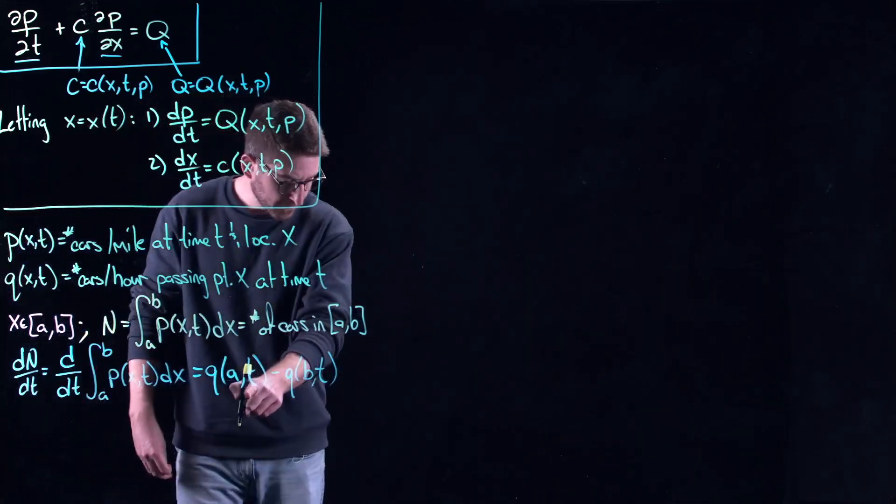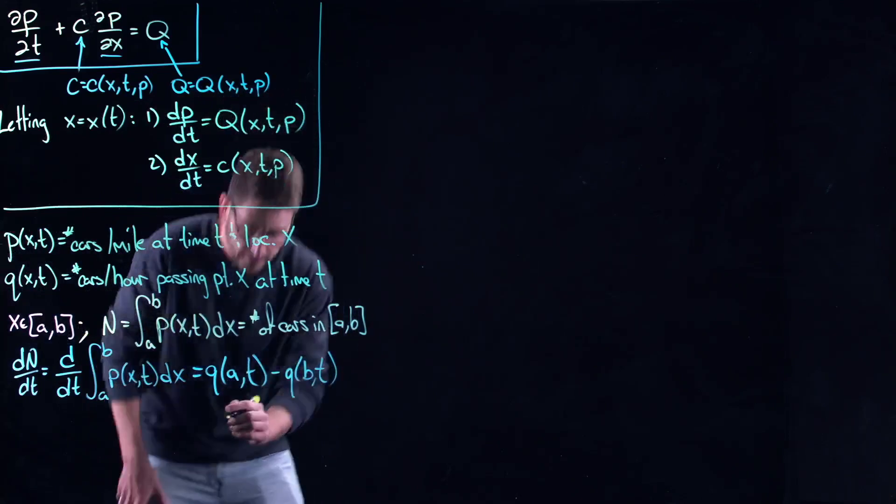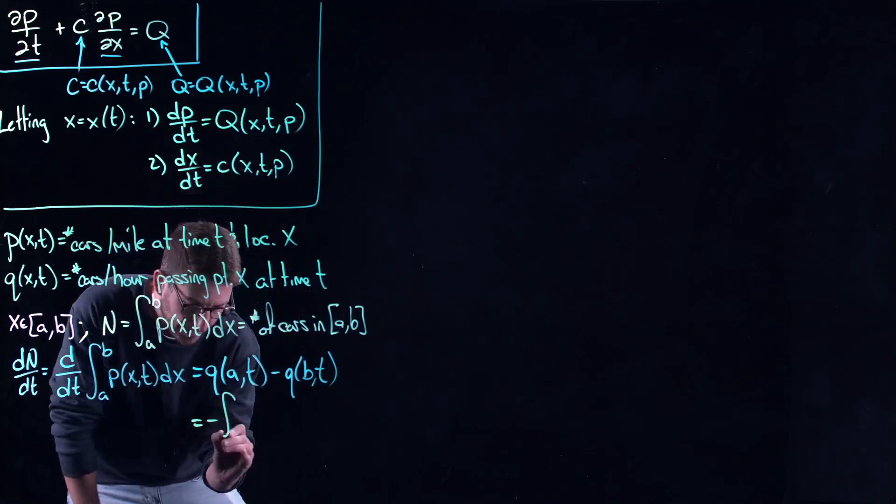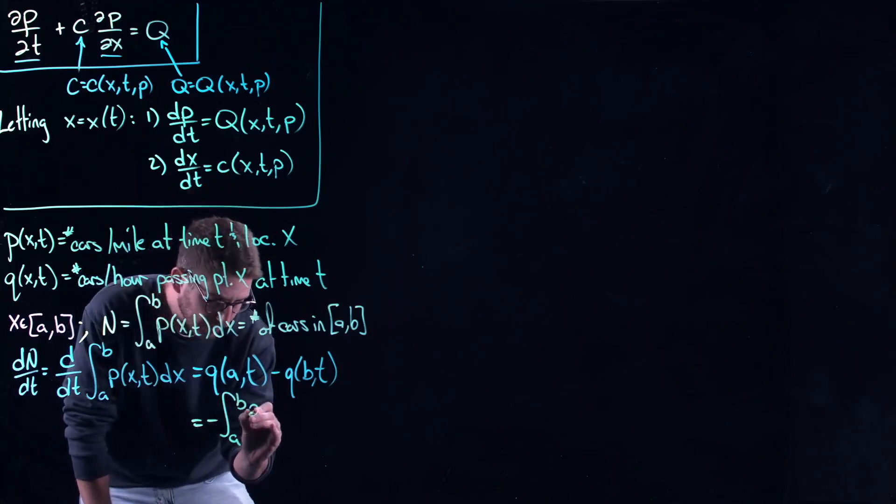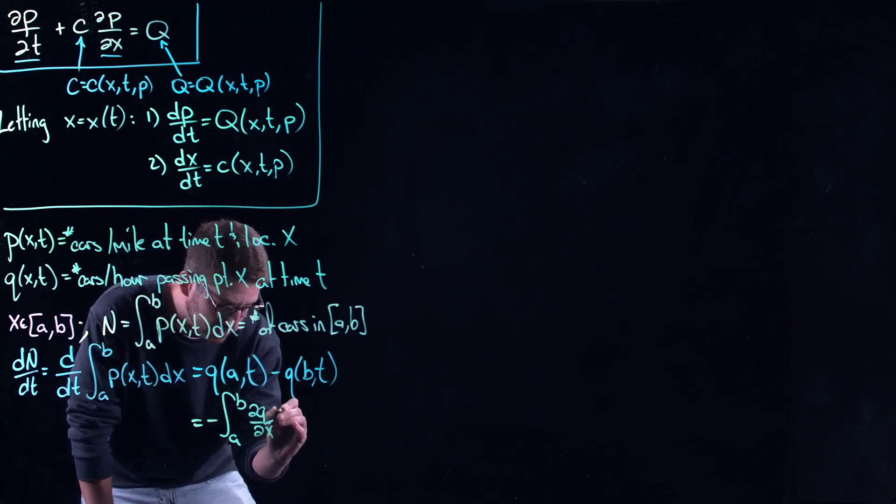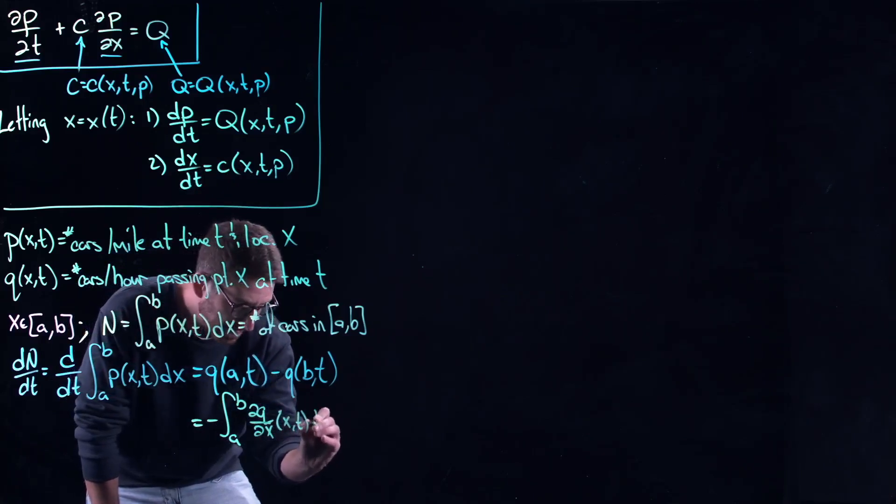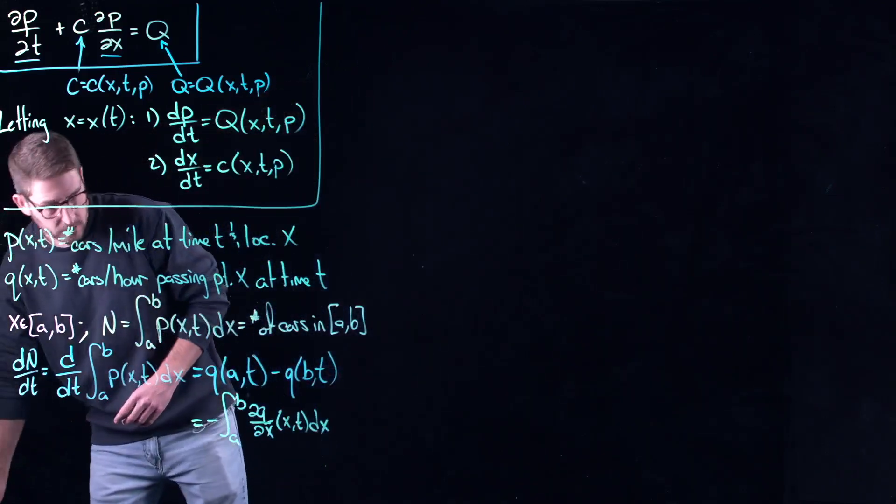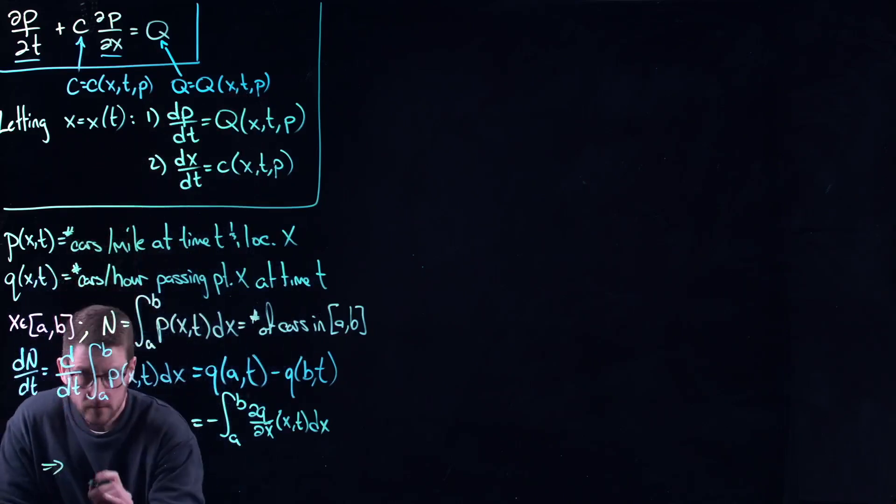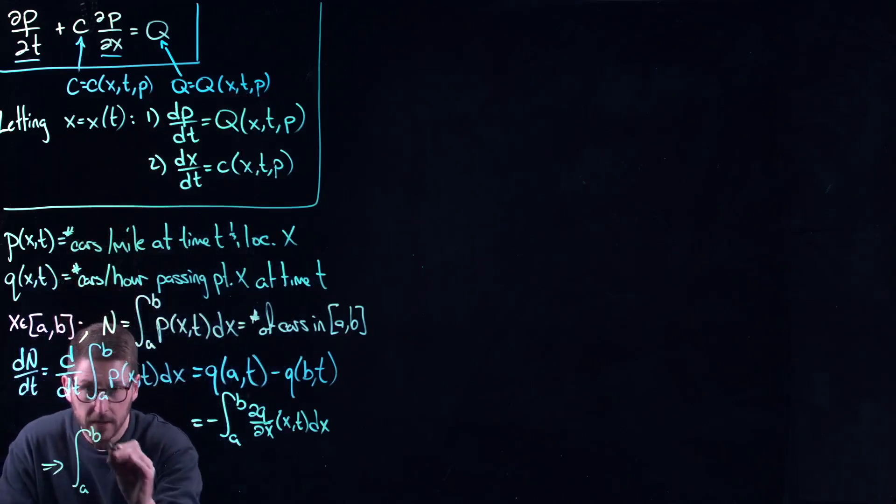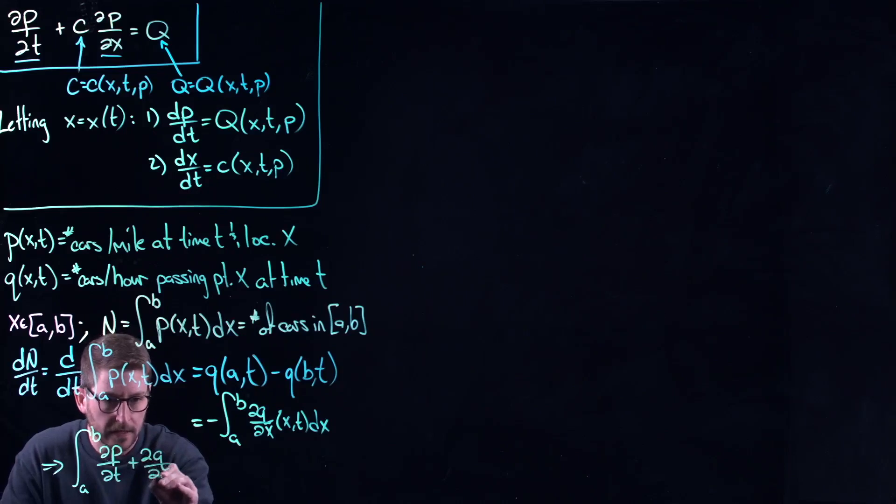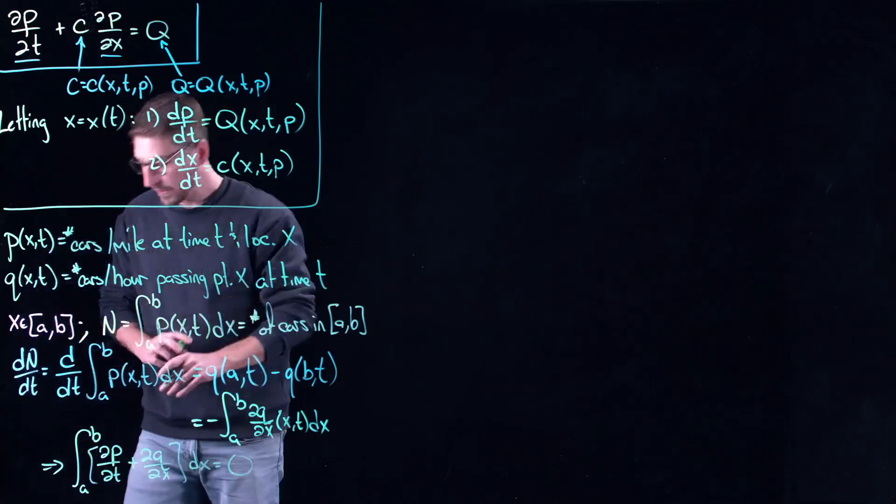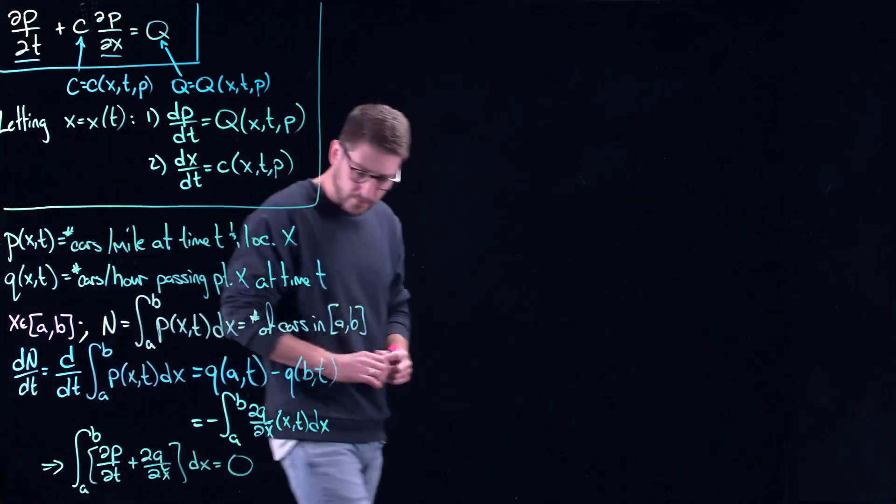Furthermore, we can use the fundamental theorem of calculus to simplify this thing. Through the fundamental theorem of calculus, this is negative of the integral from A to B of the partial of Q with respect to x. Now I have both integrals over x. So I could rearrange this thing to get the integral from A to B of the partial of P with respect to t plus the partial of Q with respect to x, and then dx is equal to zero. So all I did was just rearrange these two things, put the two integrals together, and life is good.